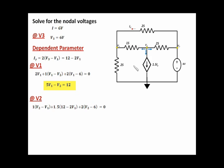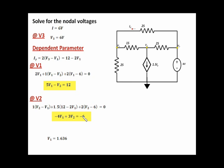I'm going to group the variables for V1 and V2. For V1 I get minus V1 then minus 3 times V1, giving minus 4 times V1. For V2 I have plus 1 plus 2, giving plus 3V2. Then 1.5 times 12 gives 18, minus 2 times 6 is 12, so 18 minus 12 gives plus 6 on this side, which becomes minus 6 on the other side. Now I have two equations and two unknowns. Solving for V1 and V2, I get V1 equals 1.636 volts and V2 equals 2.727 volts.